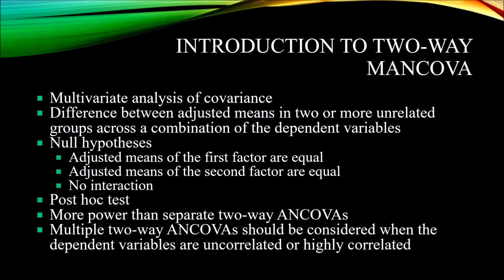Let's consider an example. Say you have a group of participants and you are assessing them with a depression inventory and an anxiety inventory after treatment, and the treatment comprises three levels. So the independent variable treatment has three levels: CBT (cognitive behavioral therapy), reality therapy, and existential therapy. That represents three levels of one independent variable, treatment.